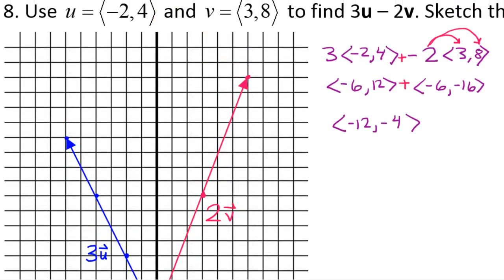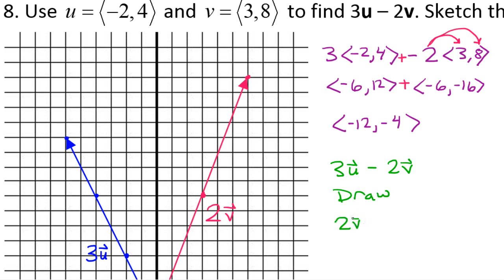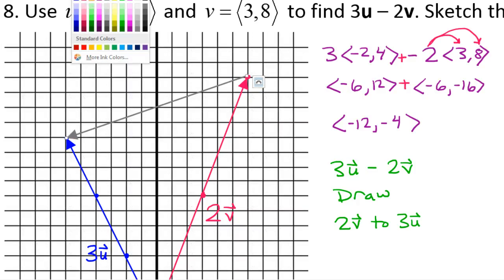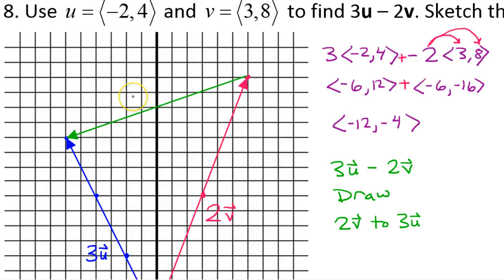When you subtract two vectors, to find the resultant you draw the resultant vector from terminal point to terminal point. The order is very important: I want to subtract 3u minus 2v, but when I draw this I need to start from 2v and draw my way over to 3u — the order is reversed from how it appears in the original problem. So I draw the resultant from the terminal point of 2v to the terminal point of 3u. I like my resultant vectors to be green. This is the vector 3u minus 2v.